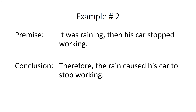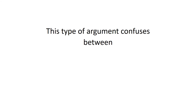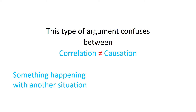This type of argument confuses two things: correlation and causation — and these two things are not the same. Correlation is when something happens alongside another situation, so two things happening at once. But causation is something actually causing something else.